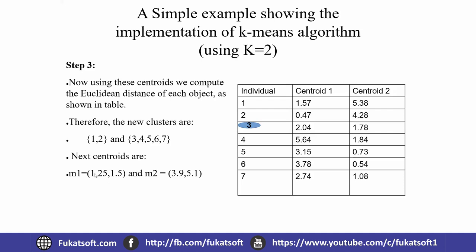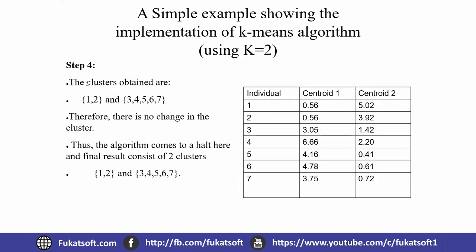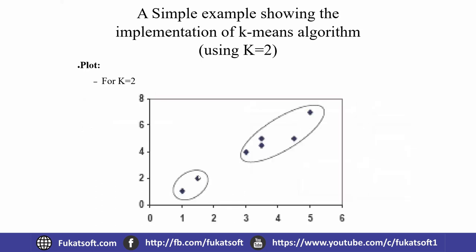New centroids m1 and m2 are recomputed. New distances are calculated, yielding new clusters. Because the clusters no longer change, the algorithm stops here — producing two final clusters: one containing elements 1, 2, 3 and the other containing elements 4, 5, 6, 7.